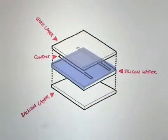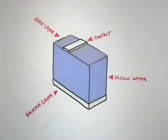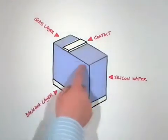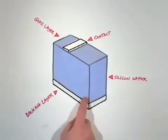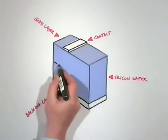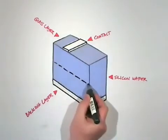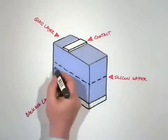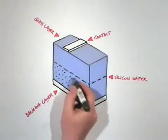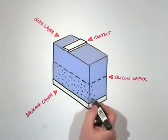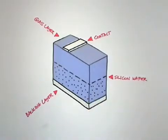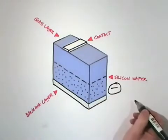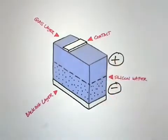Most PV cells are silicon based. Silicon is chosen for its semi-conducting potential and easy availability. The silicon wafer is very, very thin. Here's a close-up. Each side of the wafer has been treated differently. These treatments affect the behavior of the electrons in the silicon atoms, creating an electrical field at the internal interface. One side has more loose electrons bouncing around and is negatively charged. The other has more atoms with holes in them where electrons could go. This side is positively charged.